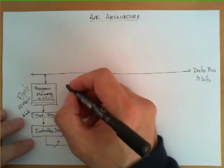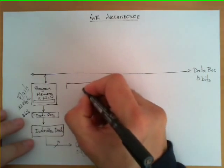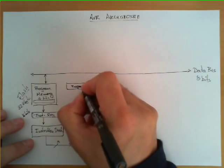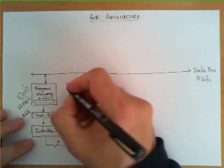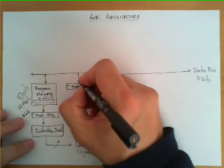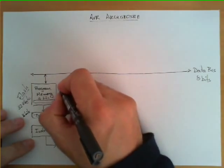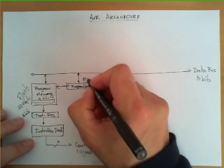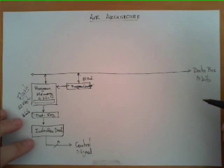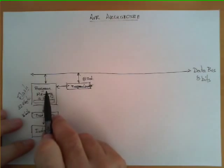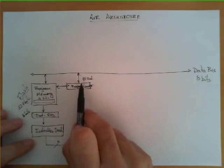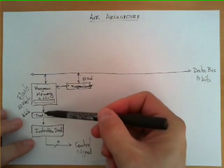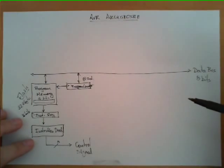Another very important module of this architecture, perhaps the register used most often, is called the program counter. This program counter is a register which is connected to the bus but most importantly is connected to the program memory. It contains the address of the next instruction to be executed, so its value is used as an address to go to the program memory, read the instruction, load it into the instruction register, and then decode it.